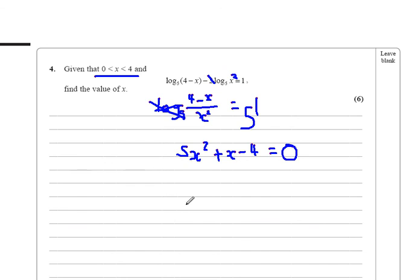We get minus b plus or minus root b squared minus 4ac, so minus 1 plus or minus root b squared is 1 minus 4ac. 4ac is 80, so 81. Actually, that means it should be able to factorize. Divide by 2a, divide by 10. We get those other two solutions.